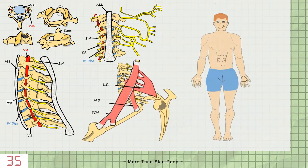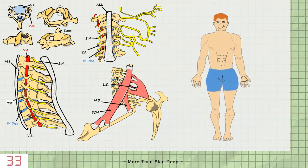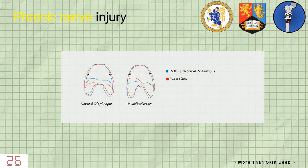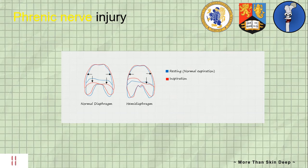Now we've seen the gross anatomy of the cervical vertebra and the cervical plexus, let's return to Chris. Due to the damage Chris has suffered to the phrenic nerve, his chest radiograph will show paradoxical movement of the diaphragm. During normal inspiration, the diaphragm contracts bilaterally in an inferior direction to increase the thoracic volume, and hence decrease pressure to allow air to fill the lungs. In paradoxical movement of the diaphragm, unilateral paralysis will mean the functioning side contracts downwards normally, whereas the paralysed side will move upwards during inspiration due to increased pressure in the abdominal cavity.